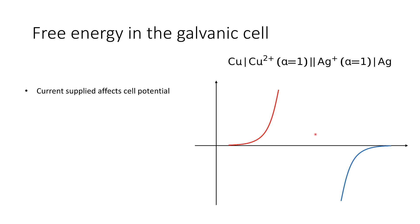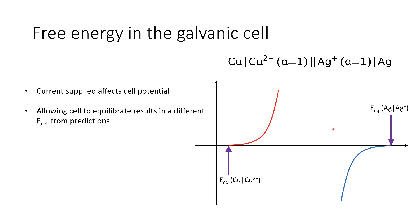If we think about our overall cell potential, we have the equilibrium cell potential for copper and the equilibrium cell potential for silver — the standard electrode potentials we look up in books — and we would expect the overall cell potential to be the difference of these. However, by allowing the cell to equilibrate, we actually get a different potential measurement. As the cell runs, concentrations change so we move away from ideality, we have an irreversible process, we might lose material, and the cell itself has a fundamental internal resistance.